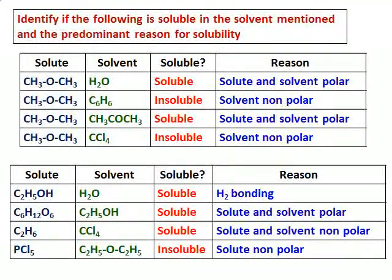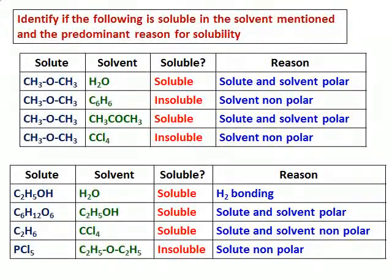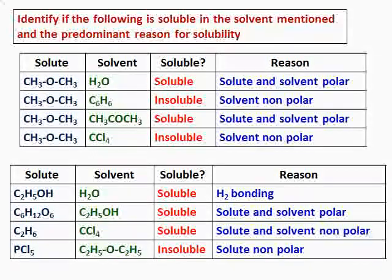Next, I'm taking ether, CH3OCH3, and dissolving it in acetone, CH3COCH3. It will be soluble because both of them are polar. And again, dissolving CH3OCH3 in the organic solvent CCl4 — CCl4 is non-polar, and hence it will be insoluble.